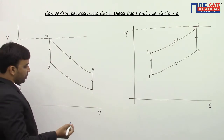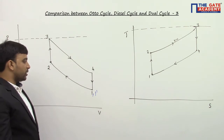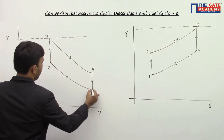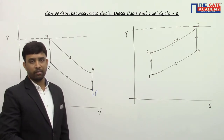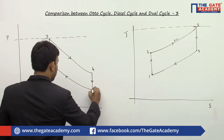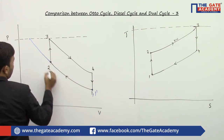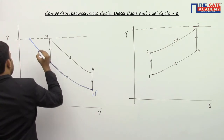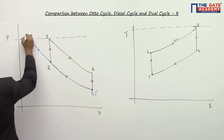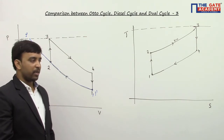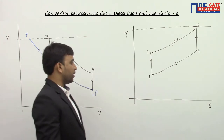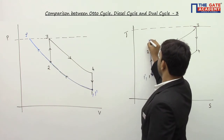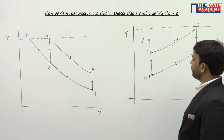Now I am drawing the diesel cycle. The inlet conditions are the same as Otto cycle since they depend on atmospheric conditions. The inlet state is 1'. In diesel cycle, pressure increases only during compression. I compress the gas until I reach the maximum pressure — this is state 2'. Since the compression ratio of the diesel cycle is smaller compared to the Otto cycle, state 2' will appear at a different position, with more compression giving more temperature rise.